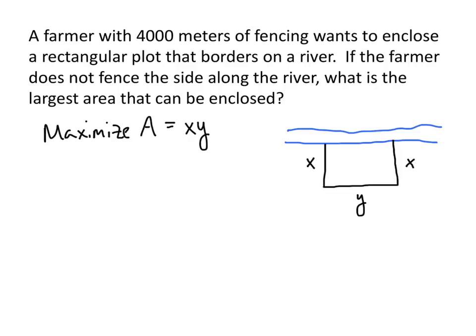And the other information is that we have 4,000 total meters of fencing. So that means that x plus y plus x has to all add up to 4,000.